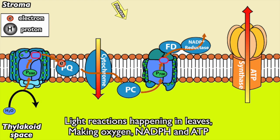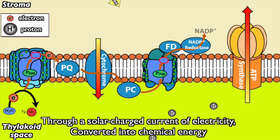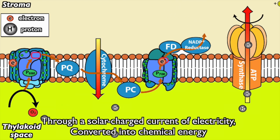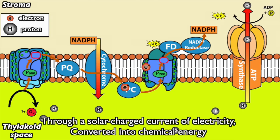Light reactions happening in leaves, making oxygen, NADPH and ATP through a solar charge current. Electricity converted into chemical energy.